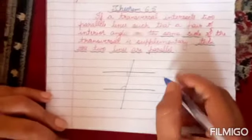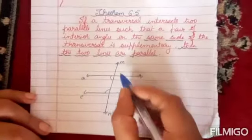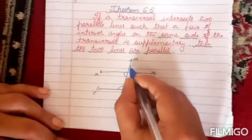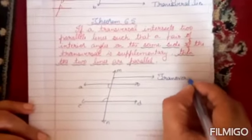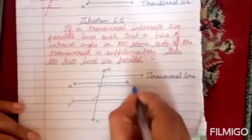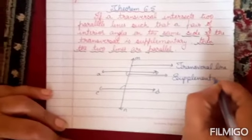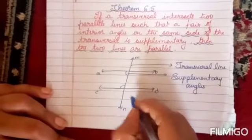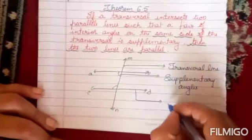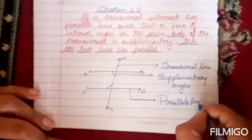These two lines are parallel. Let me name the lines: MN, AB, CD. This is the transversal line. These are supplementary angles, and these two lines are parallel lines.